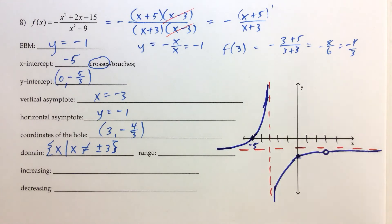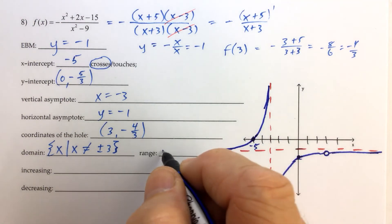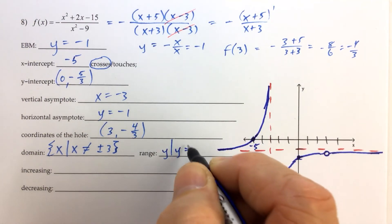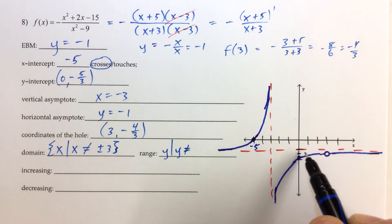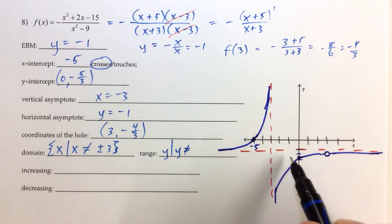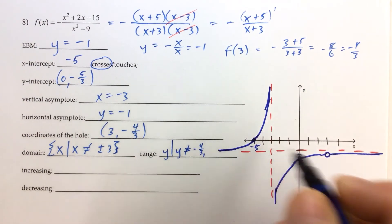Now, the range then, on the other hand, we can now look at the graph and we can see we have an opening in the graph when we move from bottom to top, from negative infinity to positive infinity. Remember the range is all real numbers y, such that y cannot equal, if we have a hole, that y coordinate of the hole is going to be a gap in our graph vertically. And we said that the y coordinate of the hole is negative 4 thirds.